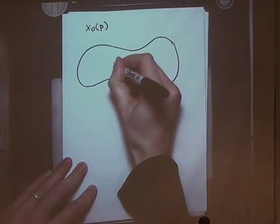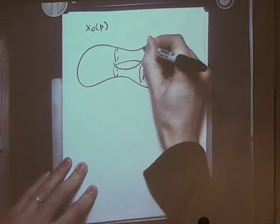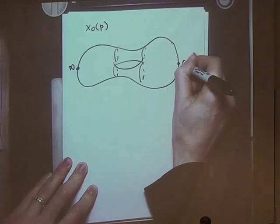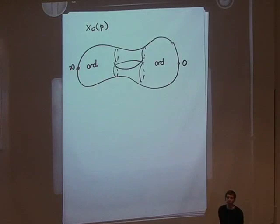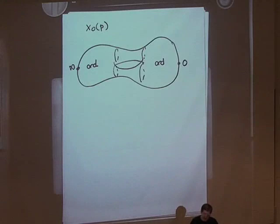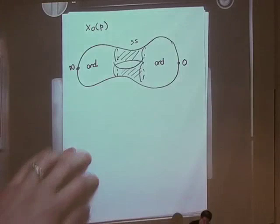So we might have a picture that looks a little like this. This is X0p. Here we have one cusp infinity, here we have one cusp zero. This is the ordinary locus — there's also some ordinary locus up the other side. This is the ordinary locus where the subgroup corresponds to the canonical subgroup, and this is the part of the ordinary locus in which it doesn't. And here in the middle is the supersingular locus.